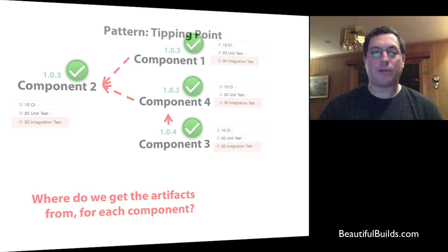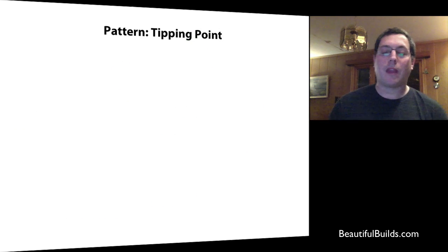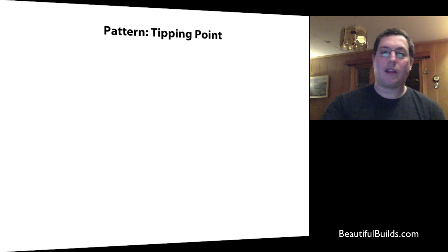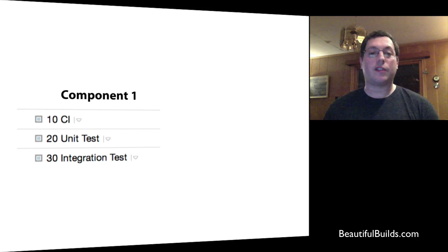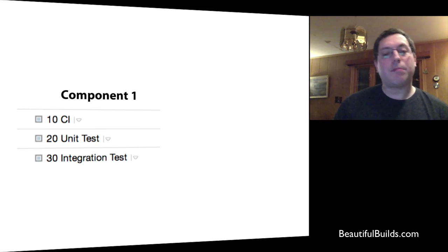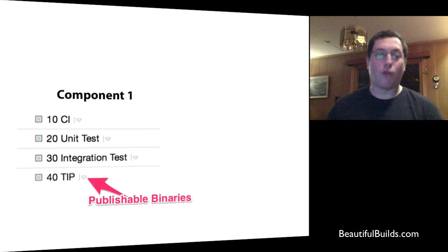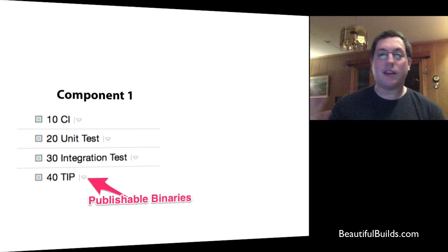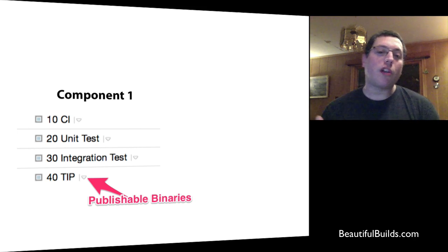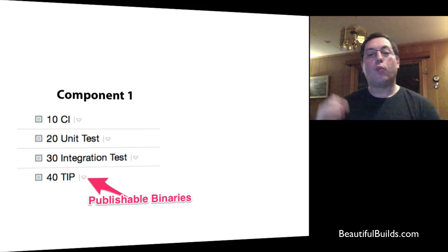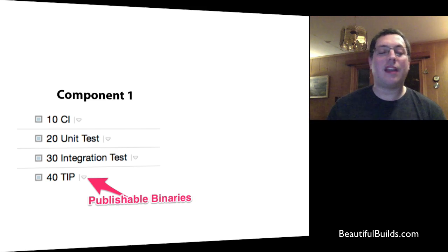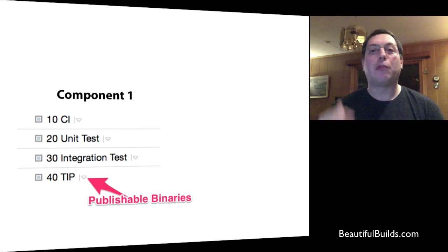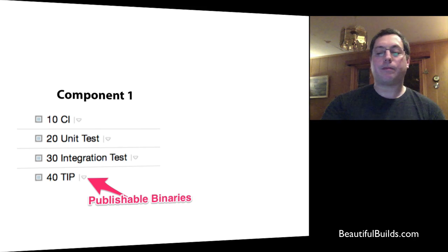It's important to create a convention where we always know where to get the latest tested binaries after they've gone through the entire important flow, so we can deploy them as part of the application. I call this pattern the Tipping Point — we create a 'tip' for each component that contains the binary. Instead of a component having just CI, unit test, and integration, each component will have one more configuration called 'tip,' and all components share this convention.